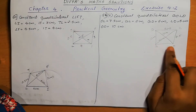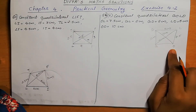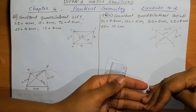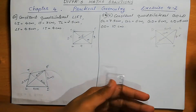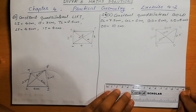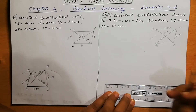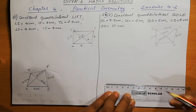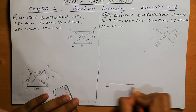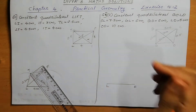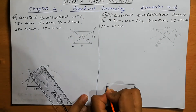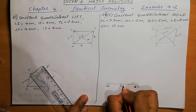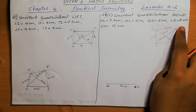Here, GO measurement is not given, so we can take LD as the base first. We can take the figure in reverse — that means LD we can take as the base. LD is 5 cm. We can mark DL = 5 cm. D to L is 5 cm.